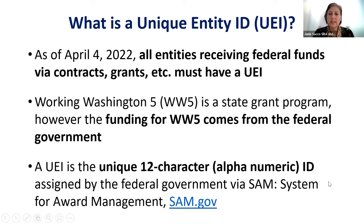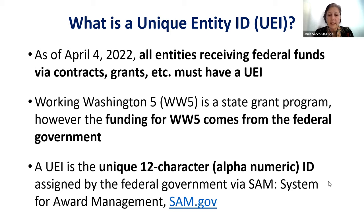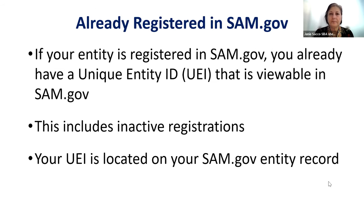The good news is that you can apply while you are waiting for your UEI, and funding will occur once you have your UEI if you do not have it at the time of application. The UEI is a unique 12-character alpha and numeric ID assigned by the federal government via the System for Award Management, otherwise known as SAM.gov. If you are already registered in SAM.gov, the good news is that you already have a unique entity ID, and this includes businesses who have inactive registrations.